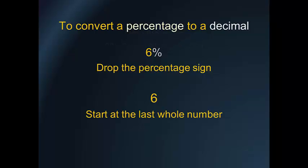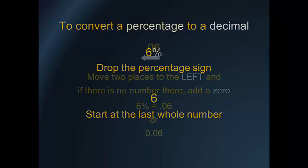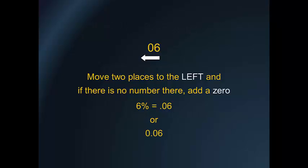To convert a percentage to a decimal, drop the percentage sign. Start at the last whole number, move it two places to the left. And if there is no number there, add a zero.